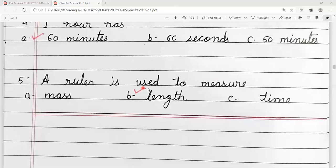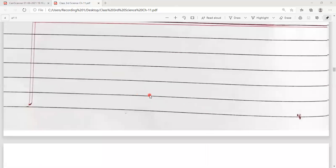Number 5, a ruler is used to measure. Ruler hum kya measure karne ke liye use karte hain? Length.